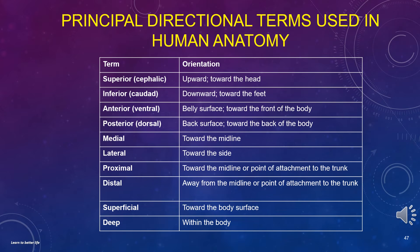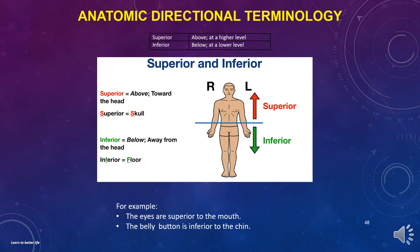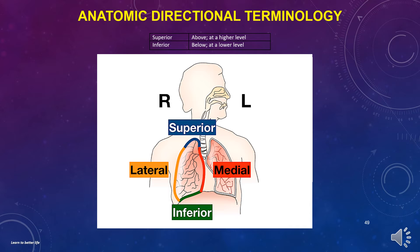We will learn all the directional terms used in human anatomy. Superior means above, at a higher level. Inferior means below, at a lower level. For example, the eyes are superior to the mouth, and the belly button is inferior to the chin. You can think of superior as up and inferior as down.